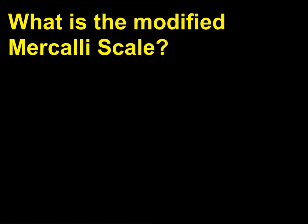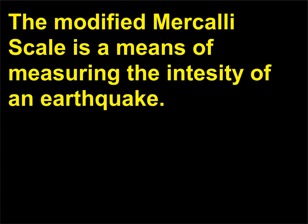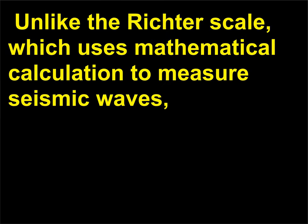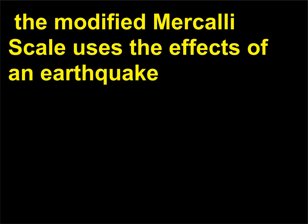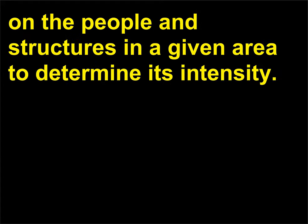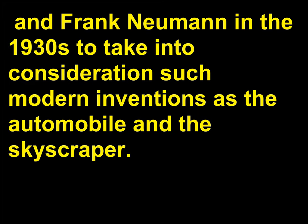What is the modified Mercalli scale? The modified Mercalli scale is a means of measuring the intensity of an earthquake. Unlike the Richter scale, which uses mathematical calculation to measure seismic waves, the modified Mercalli scale uses the effects of an earthquake on the people and structures in a given area to determine its intensity. It was invented by Giuseppe Mercalli (1850–1914) in 1902 and modified by Harry Wood (1879–1958) and Frank Newman in the 1930s to take into consideration such modern inventions as the automobile and the skyscraper.